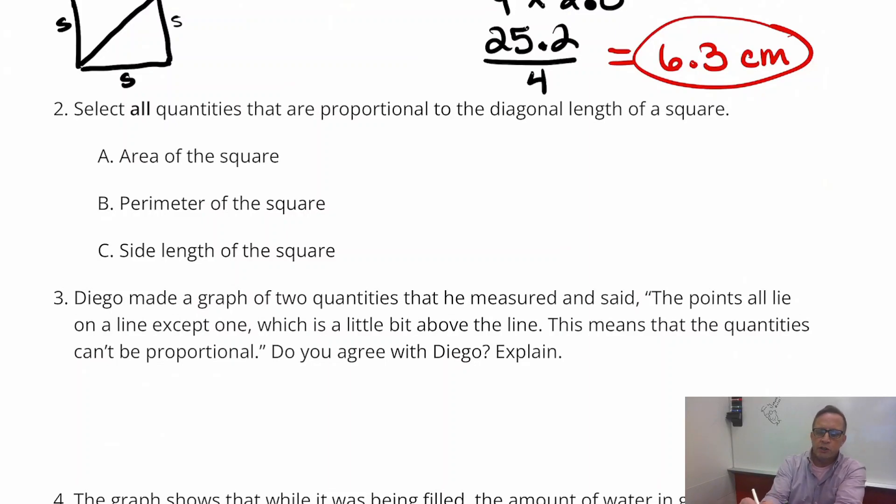One thing is for sure, and one thing is for certain, is that perimeter is going to be, when you look at a graph for instance. You look at a graph and you look at the side length compared to the perimeter. It is going to be straight as an arrow. Hence, it's proportional.